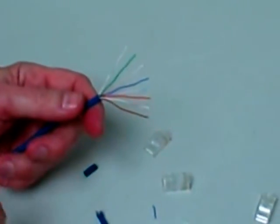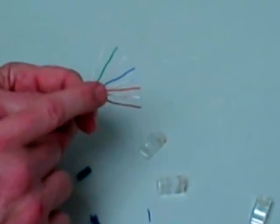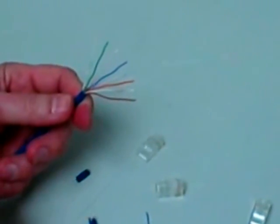Okay, so I've separated the wires and I've got green stripe, green, orange stripe, blue, blue stripe, orange, brown stripe, brown.